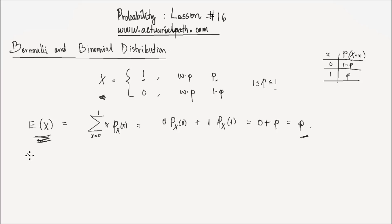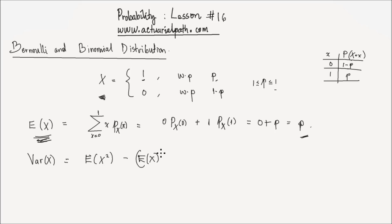Let's find the variance of this random variable x. The variance equals the expected value of x squared — the second moment — minus the expected value of x, quantity squared. We know the expected value of x, so I can write this as the expected value of x squared minus p squared.